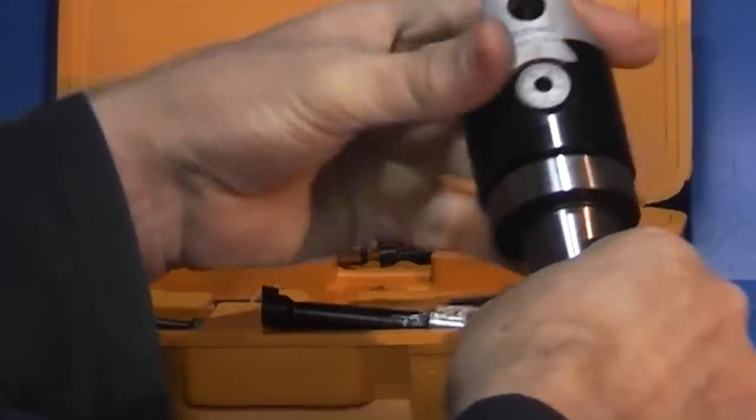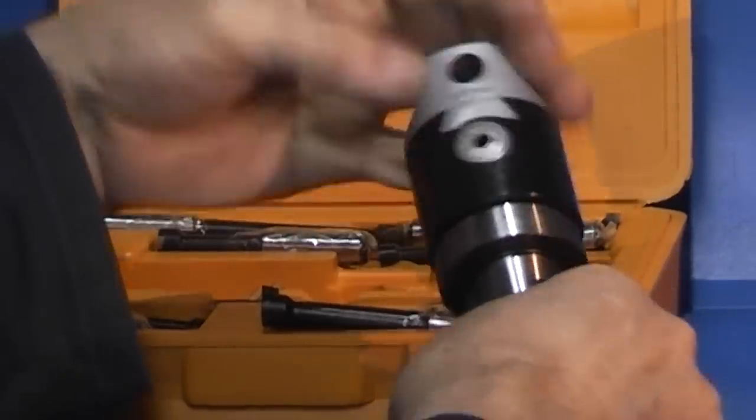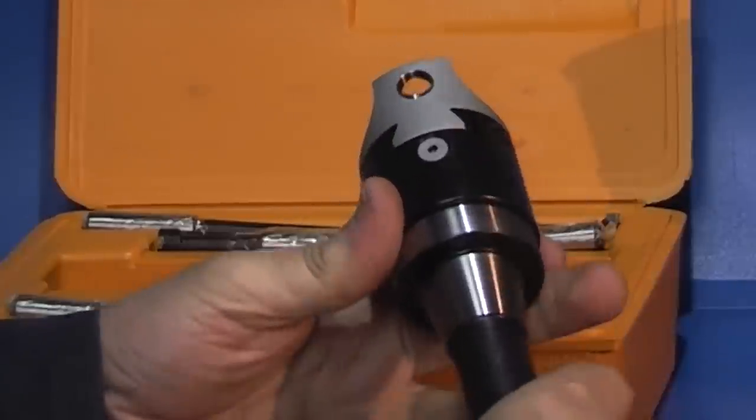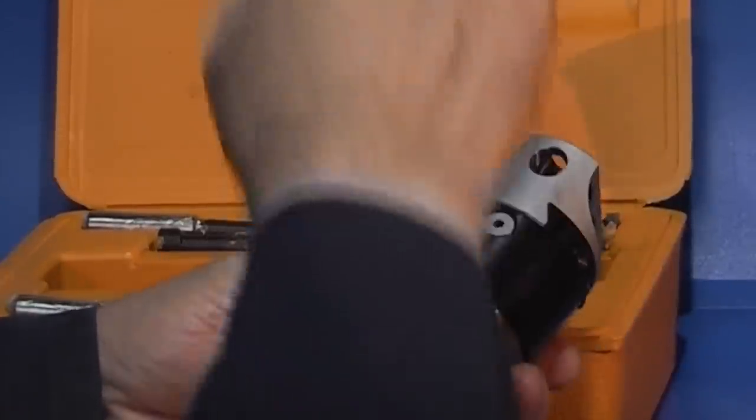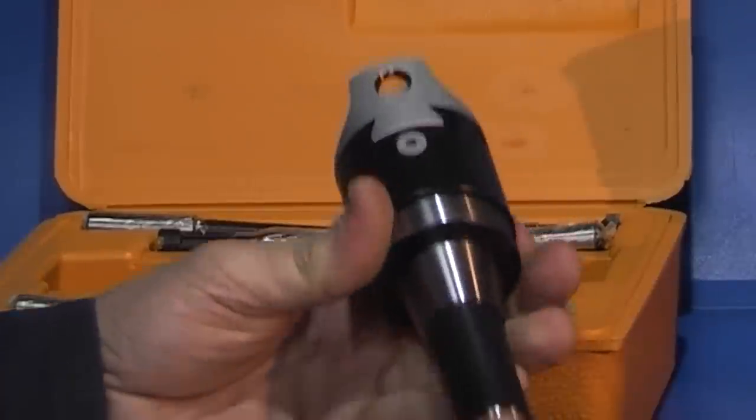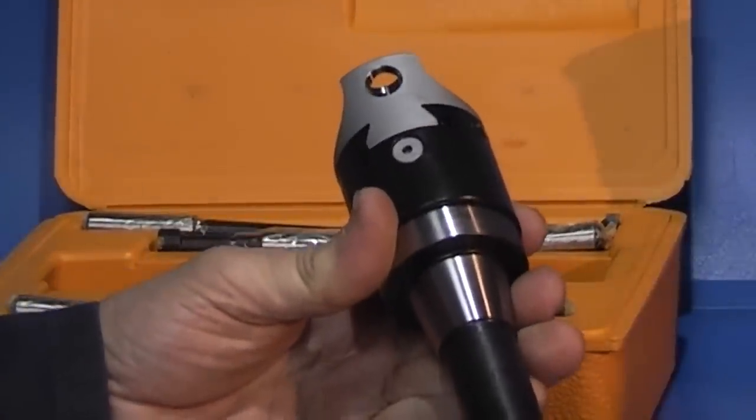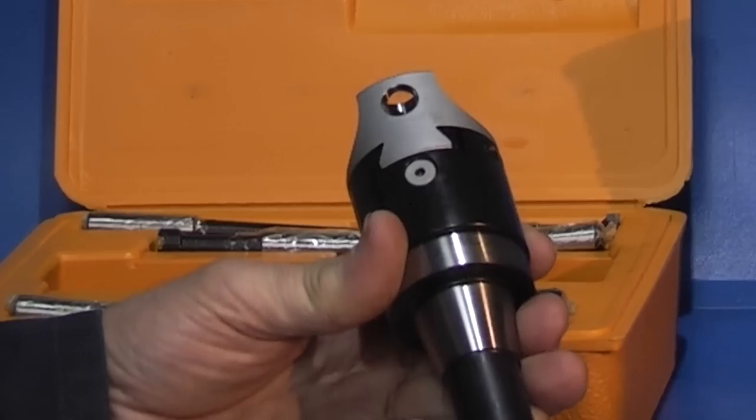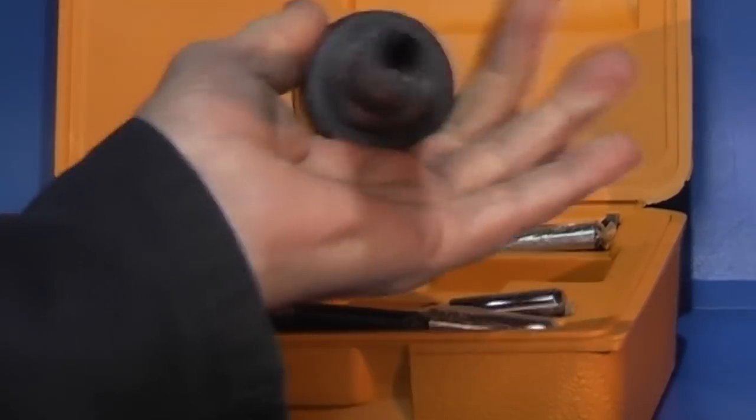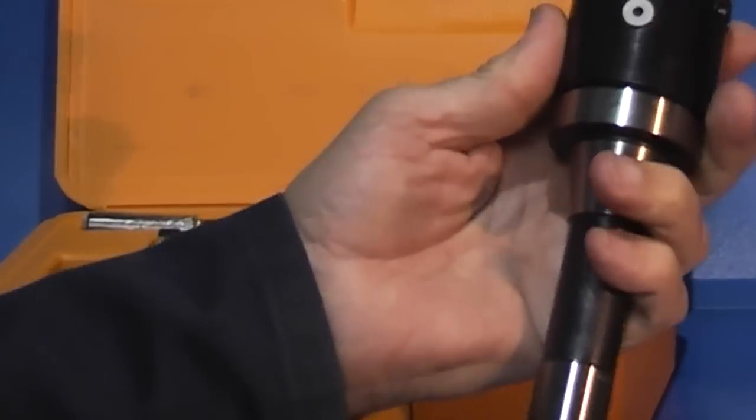The arbor just screws on so you can change the arbor. You can buy the arbor separate and the boring head separate and the tools separate. I don't know why they don't do the kit with three different arbors so you could choose the kit that suits you.